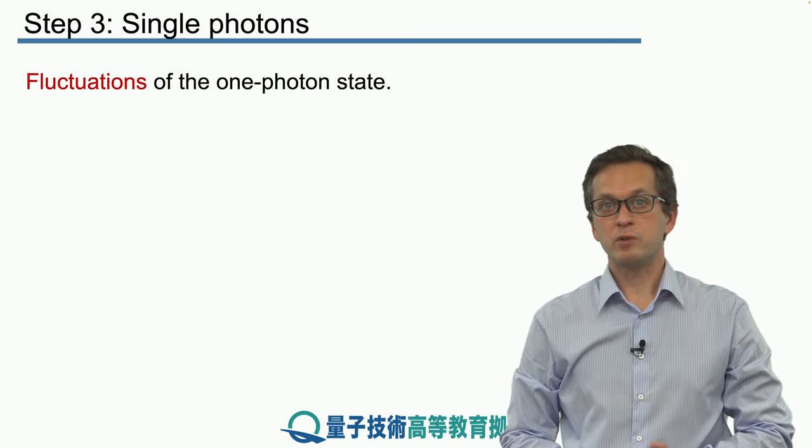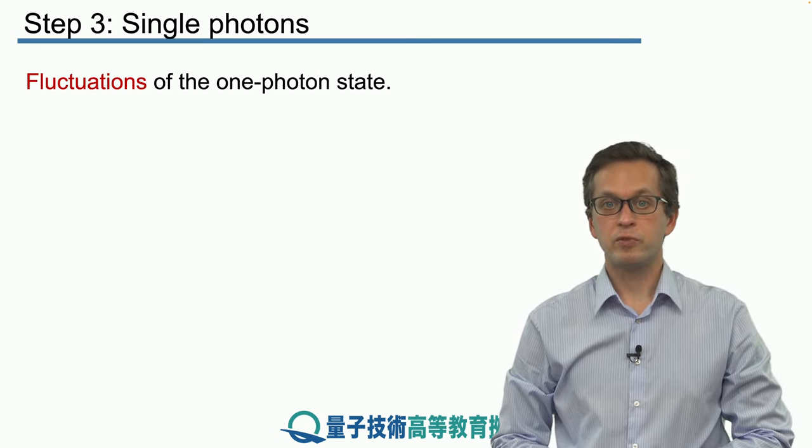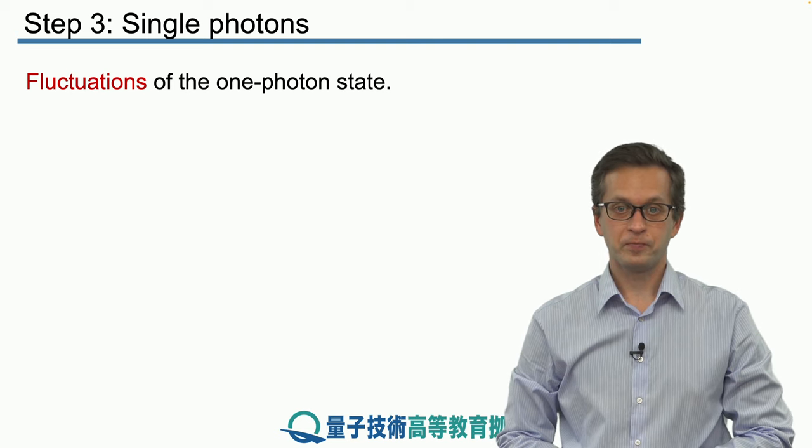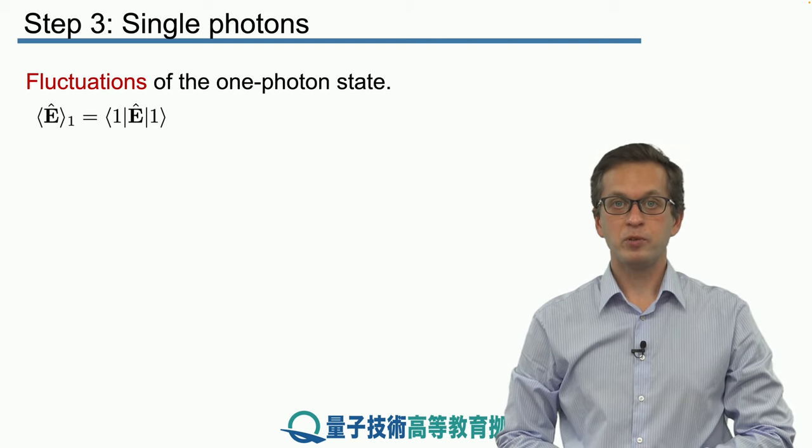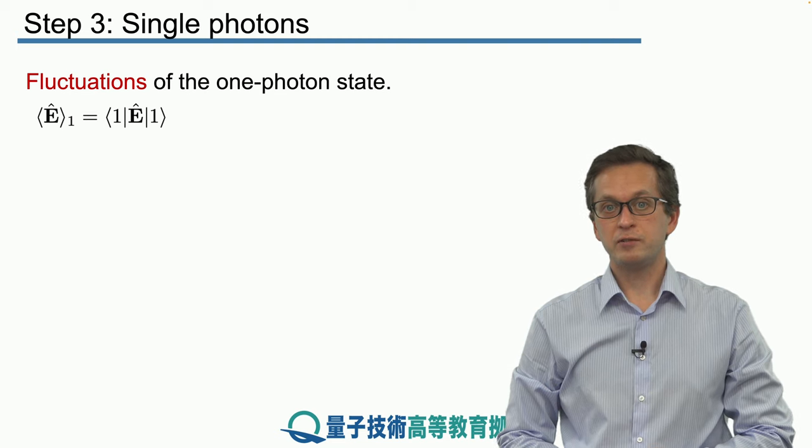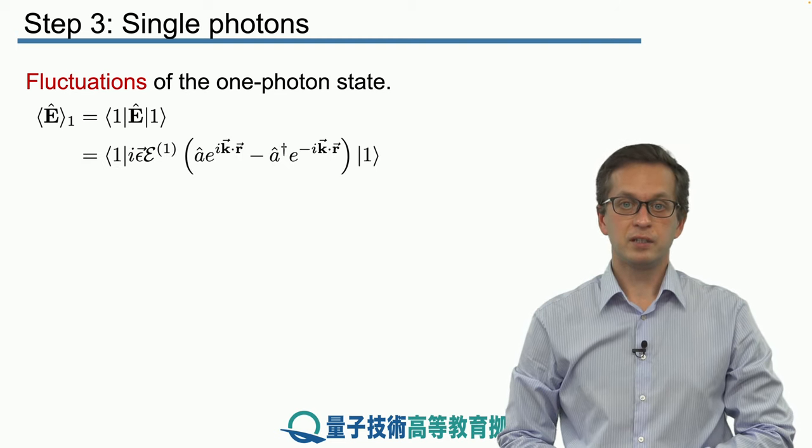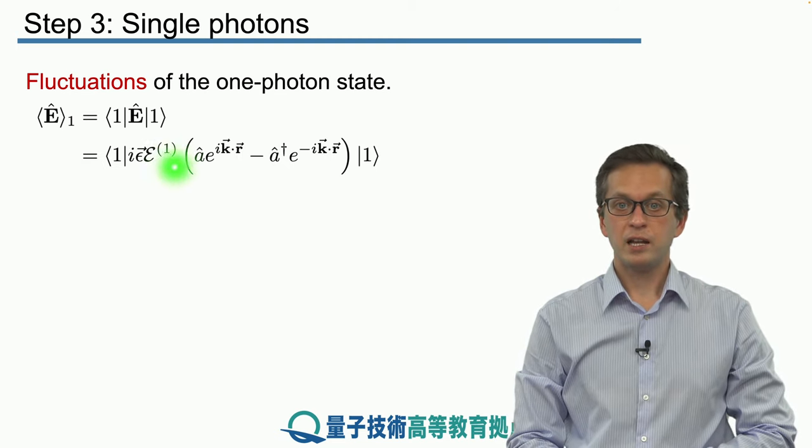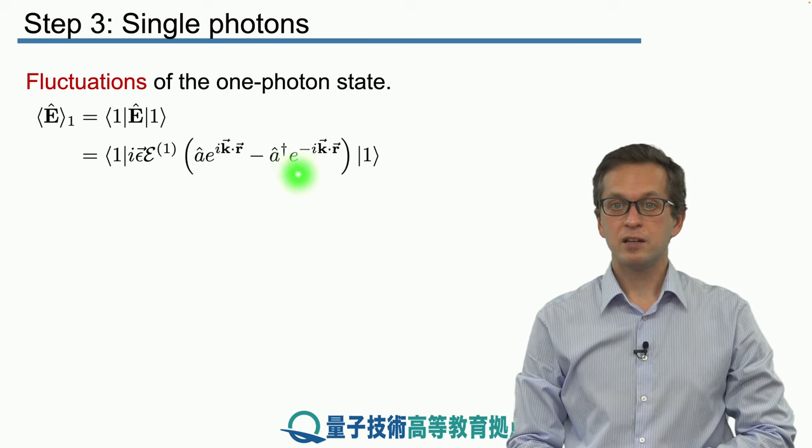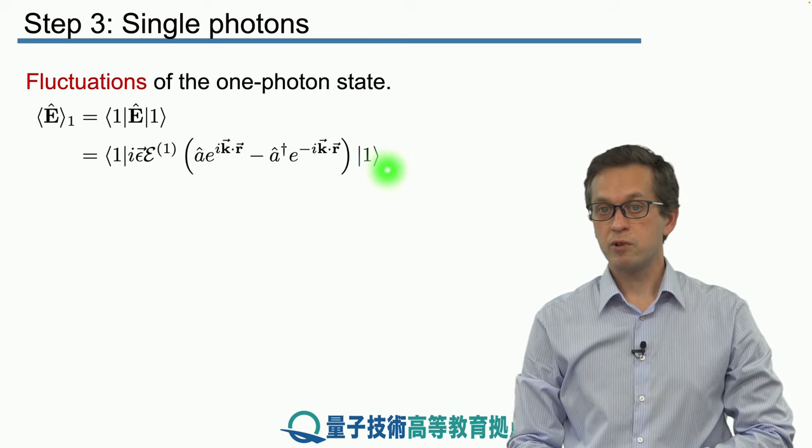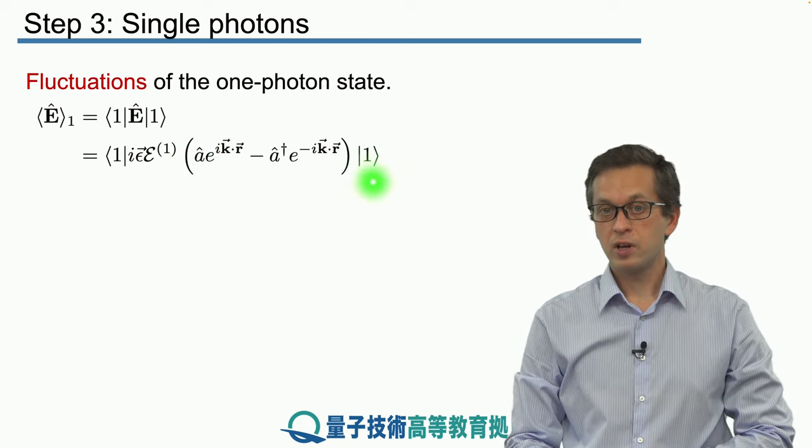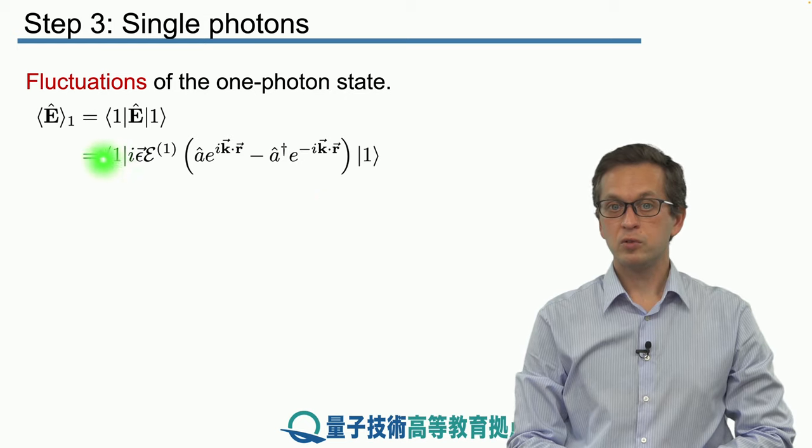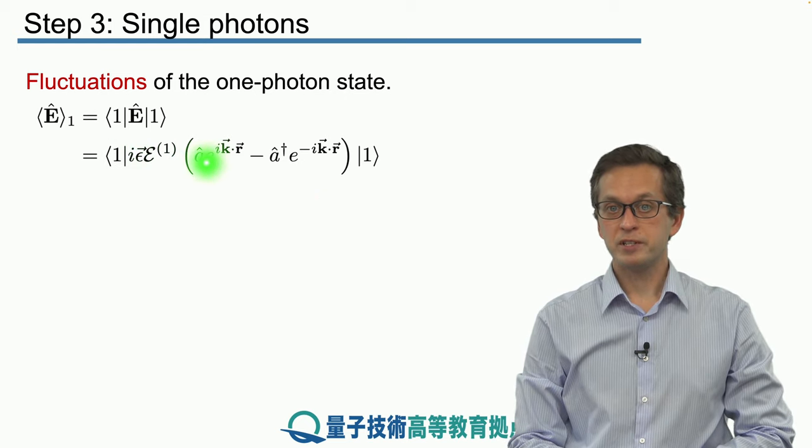So again we ask the same question: what are the fluctuations of a one photon state? We begin by computing the average of the electric field written here, and again we can see that applying a to 1 we get 0, in other words the vacuum, which is orthogonal to the one photon state. So the first term disappears.